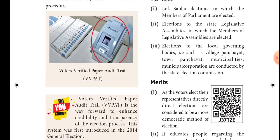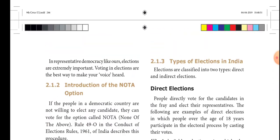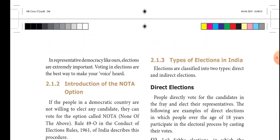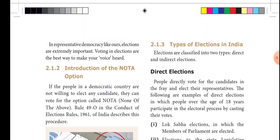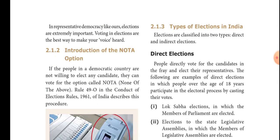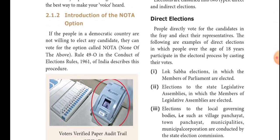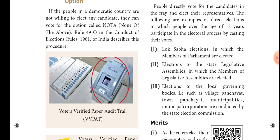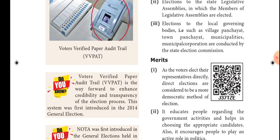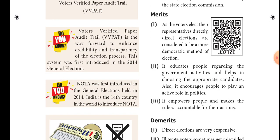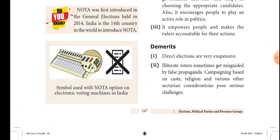Now we will discuss the types of elections in India. There are two types: direct election and indirect election. The Lok Sabha election is called a direct election, and the Rajya Sabha election is an indirect election. We already discussed the merits and demerits of each type.